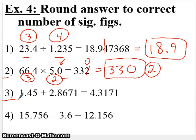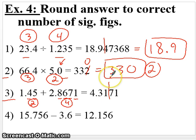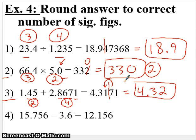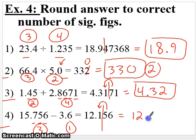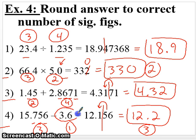For addition in example three, we go by the least number of decimal places. The first number has two decimal places and the second has four, so our answer should have just two decimal places. We'll have to consider rounding — the seven rounds up the one to a two, so this answer is 4.32. The final example is subtraction. We have three decimal places on the first number and just one on the second, so we round down to one decimal place. The five rounds up, so our answer is 12.2. Notice our answer has three significant digits even though our least is two — that's because with subtraction we go by decimal places, not the total number of figures. This wraps up video 1.2.